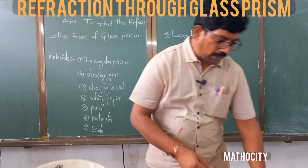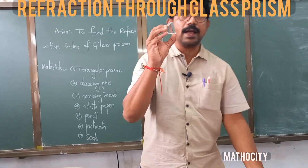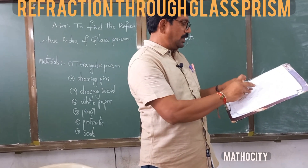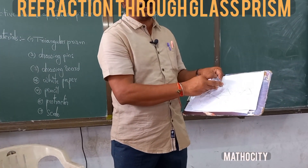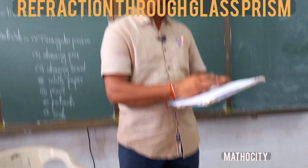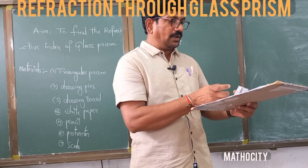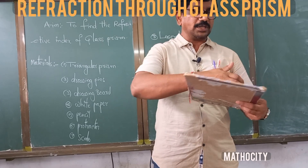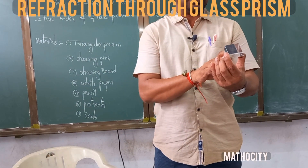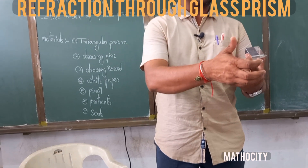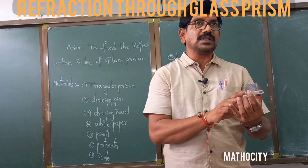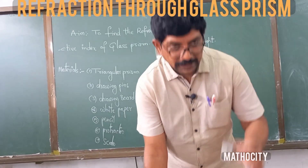First, one glass prism — this is a triangular glass prism. The angle between these two faces is 60 degrees. This is one refracting surface and this is another refracting surface. The light which enters from this surface and emerges out from this surface. So the light which is incident here emerges out from this surface; within the glass prism, the light rays suffer refraction.